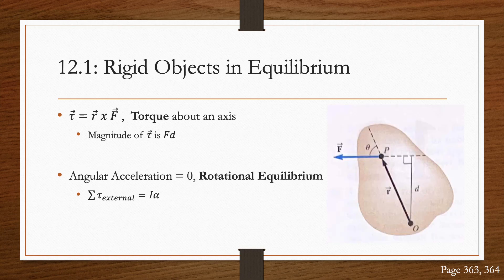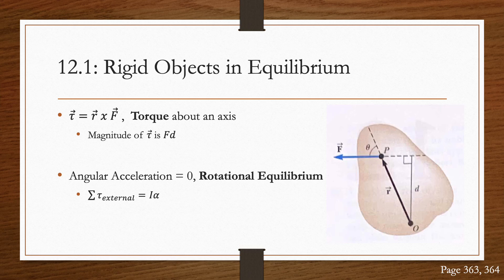In Section 12.1, Rigid Objects in Equilibrium, we are looking at a graphic where there is a force acting on a rigid object. If we remember from Chapter 11, we recall that the torque associated with the force of an axis, which in this case point O, is given as torque equals R cross F.